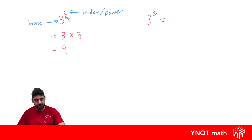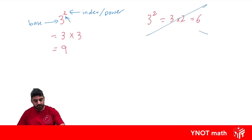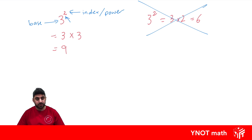One of the most common mistakes is thinking three to the power of two equals three times two, which equals six. We just proved that is not the case — that's a big no-no. So you don't want to be making that mistake. Three to the power of two means three times three, and that's equal to nine.